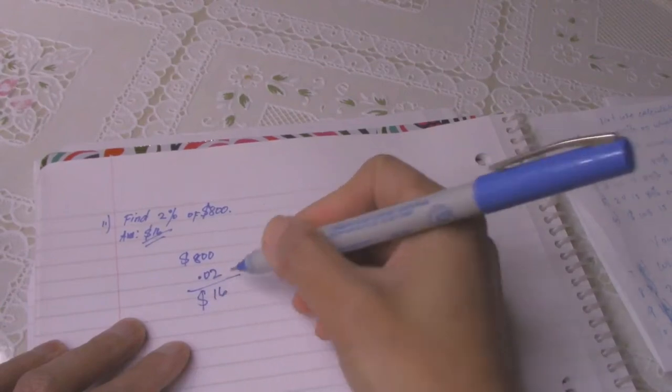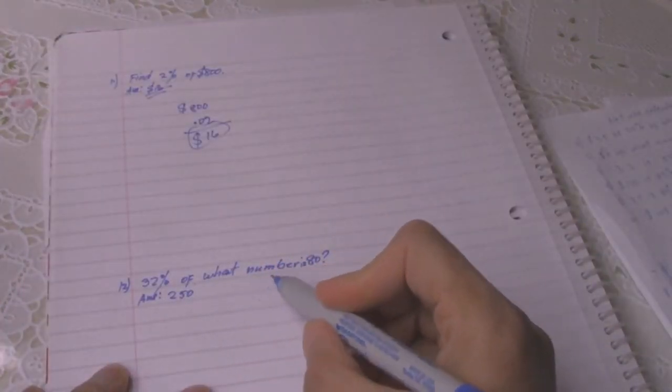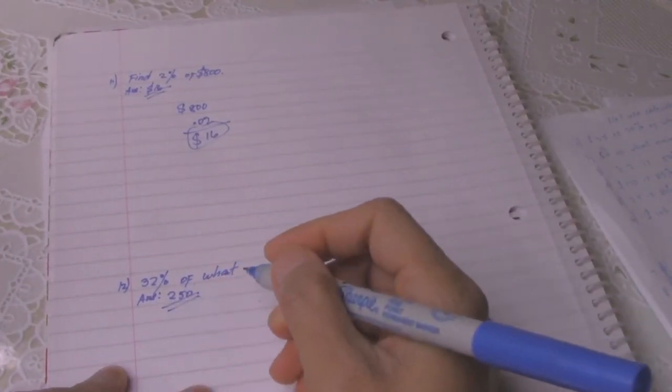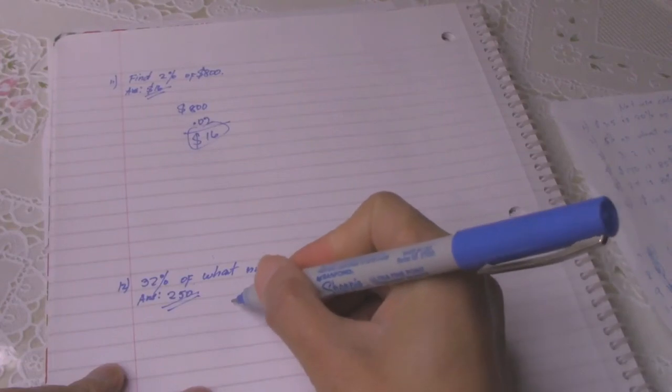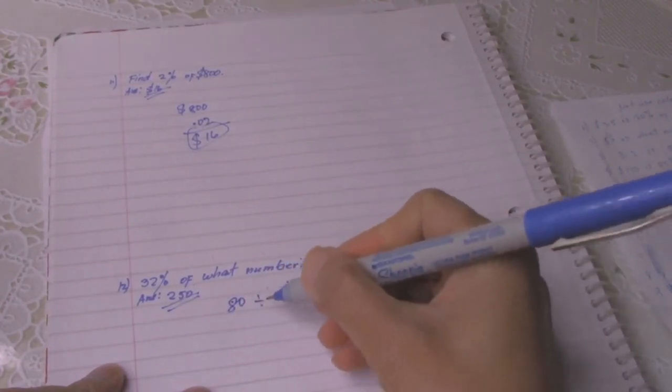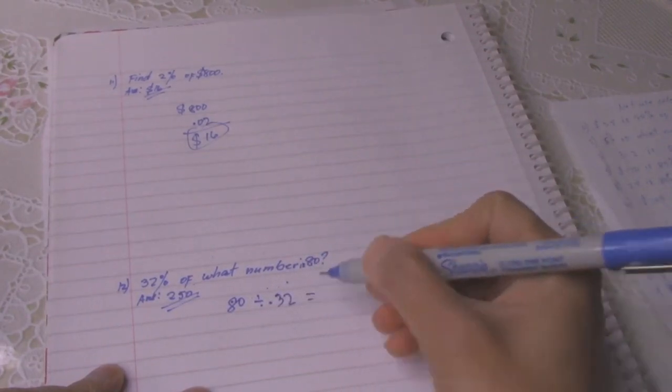Number 12: 32 percent of what number is 80? Answer is 250. 80 divided by 0.32 equals 250.